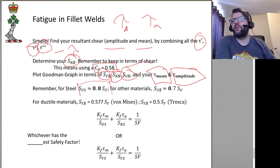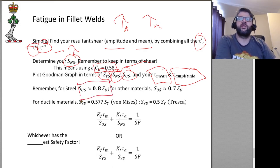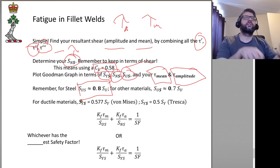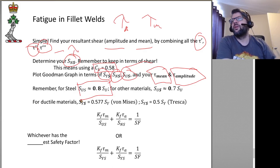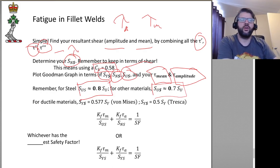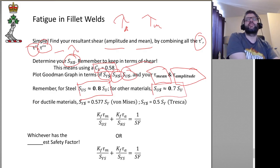For steels, a typical value for the ultimate shear strength is 0.8 of the ultimate tensile strength. For other materials, they tend not to perform quite as well as steel in terms of shear relative to ultimate load, so 0.7 SU is typically used. That is, of course, if you don't have actual shear strength data for the material — if you have it, use it.